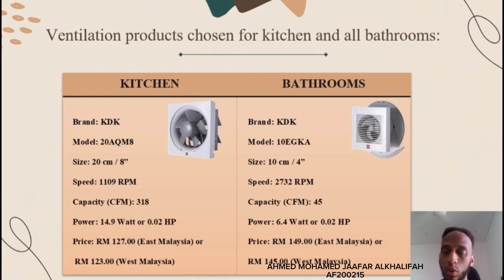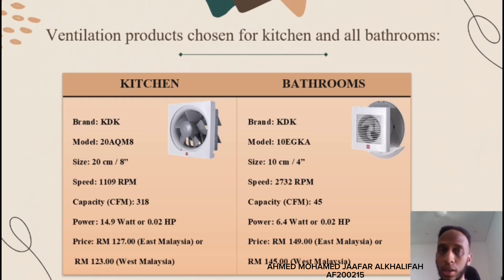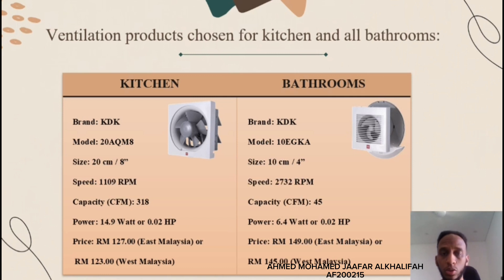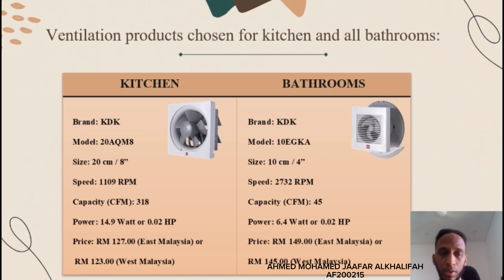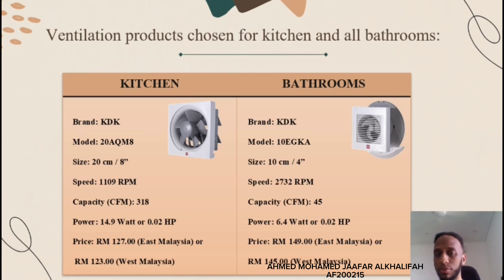For the ventilation products that we have chosen, after considering a lot of important factors in the process of choosing products for both the kitchen and all the bathrooms in this project, here is the product we chose for the kitchen and its specifications: the model name, number, size, speed, capacity, power, and price. The prices are within the range for both the kitchen and bathroom, from 120 ringgits to 150 ringgits.